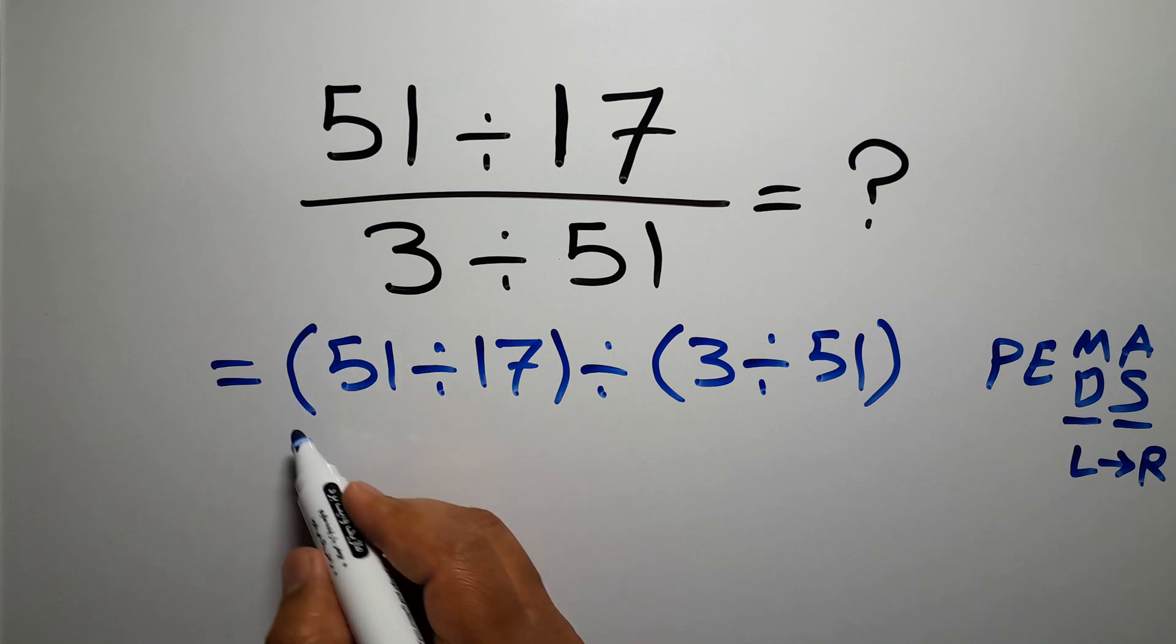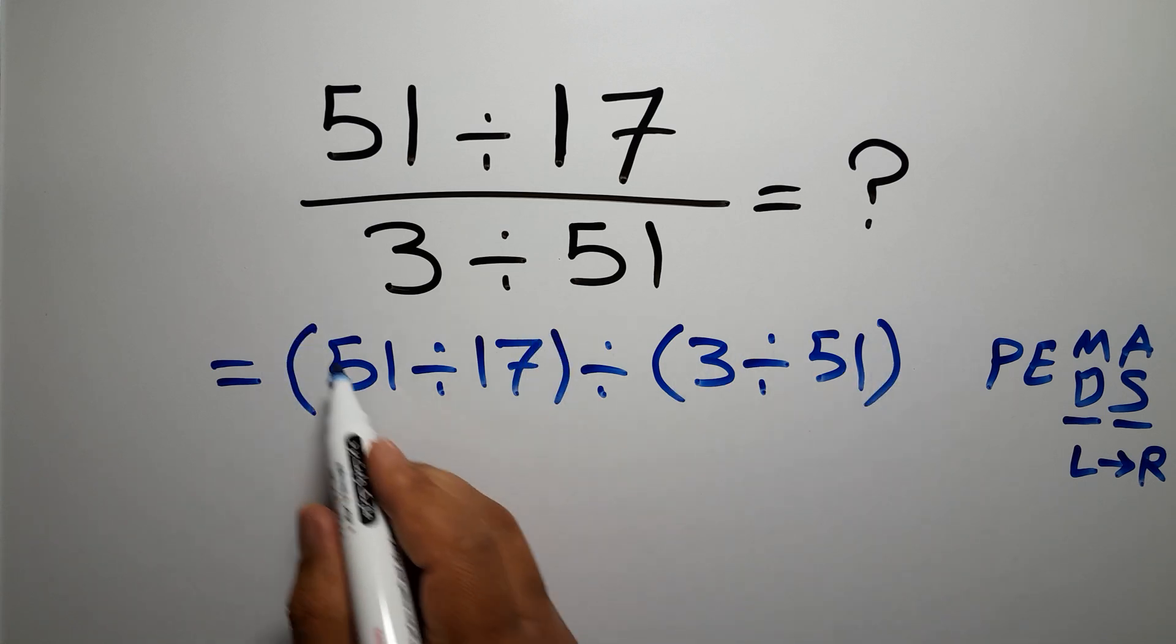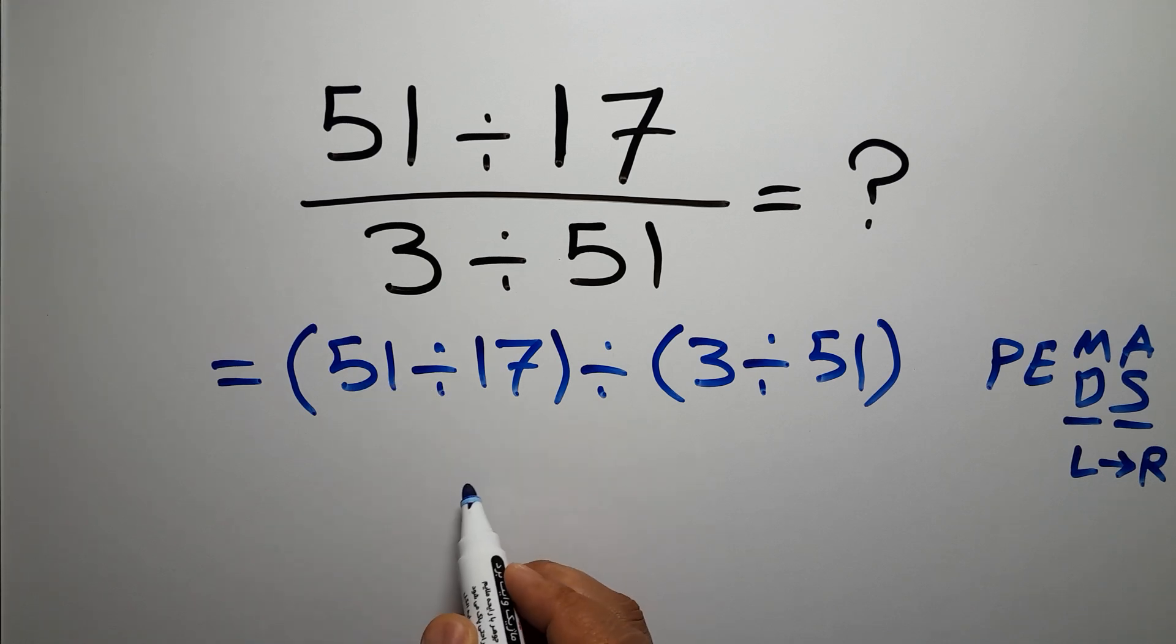So here, first we have to do these two parentheses. Inside these parentheses, we have 51 divided by 17, which equals 3.